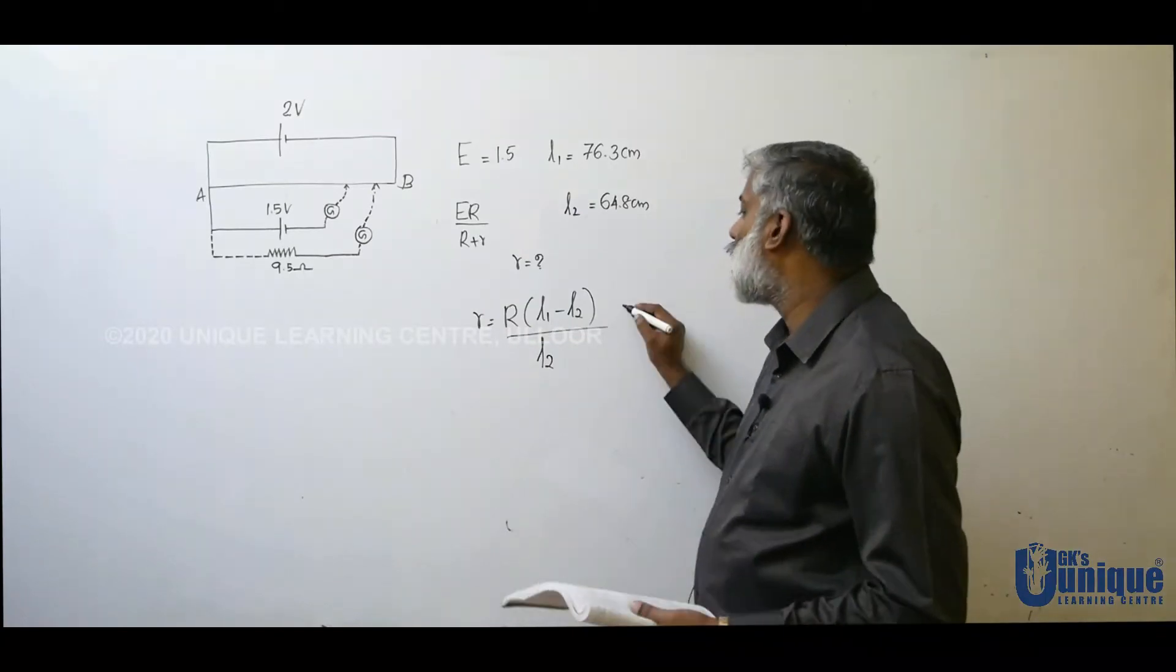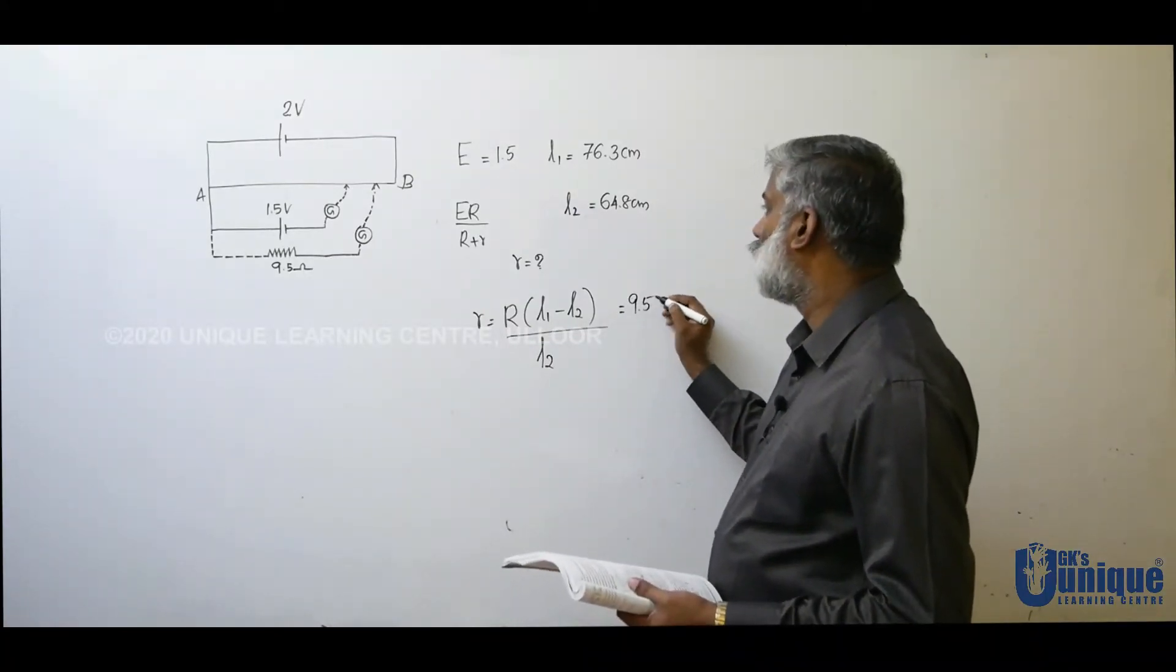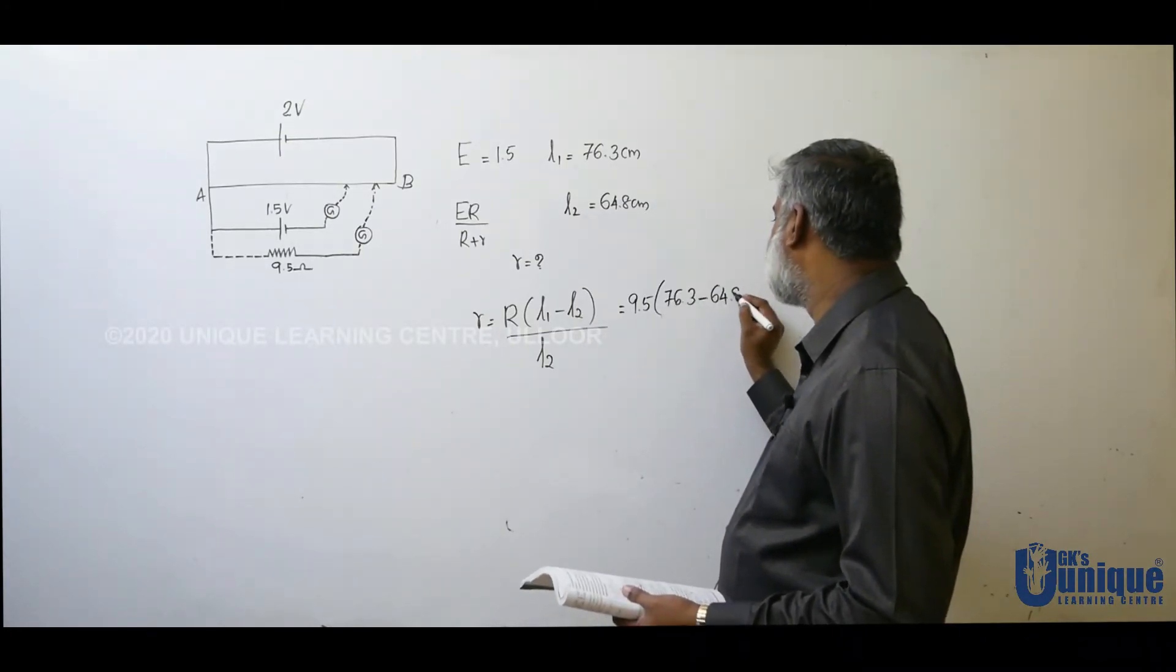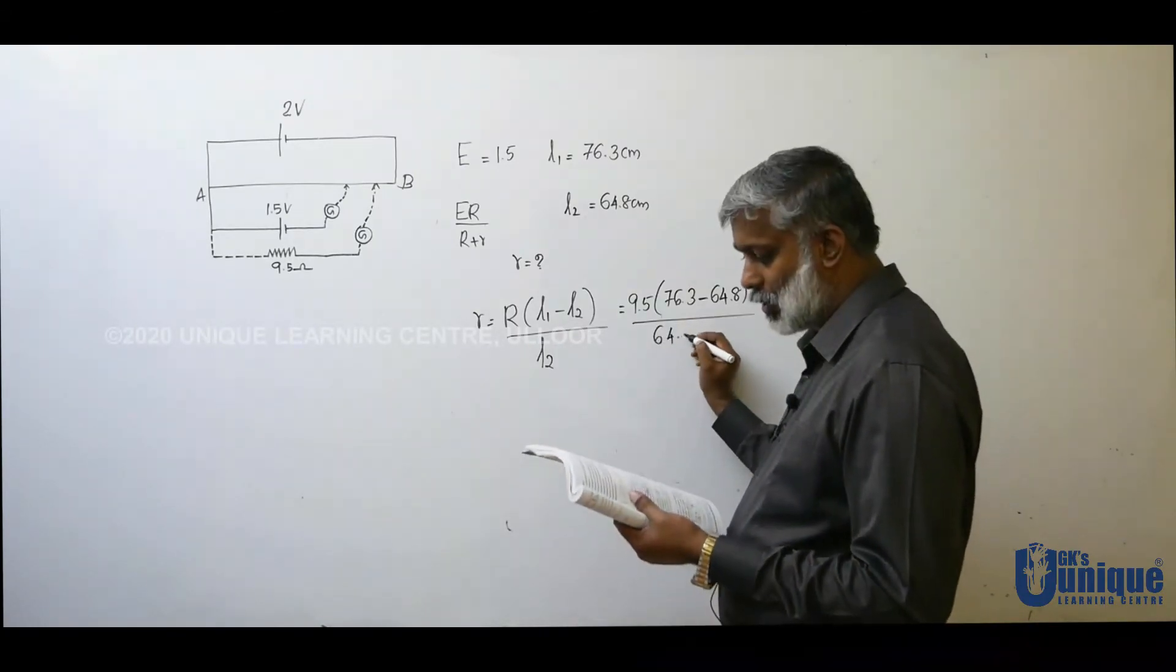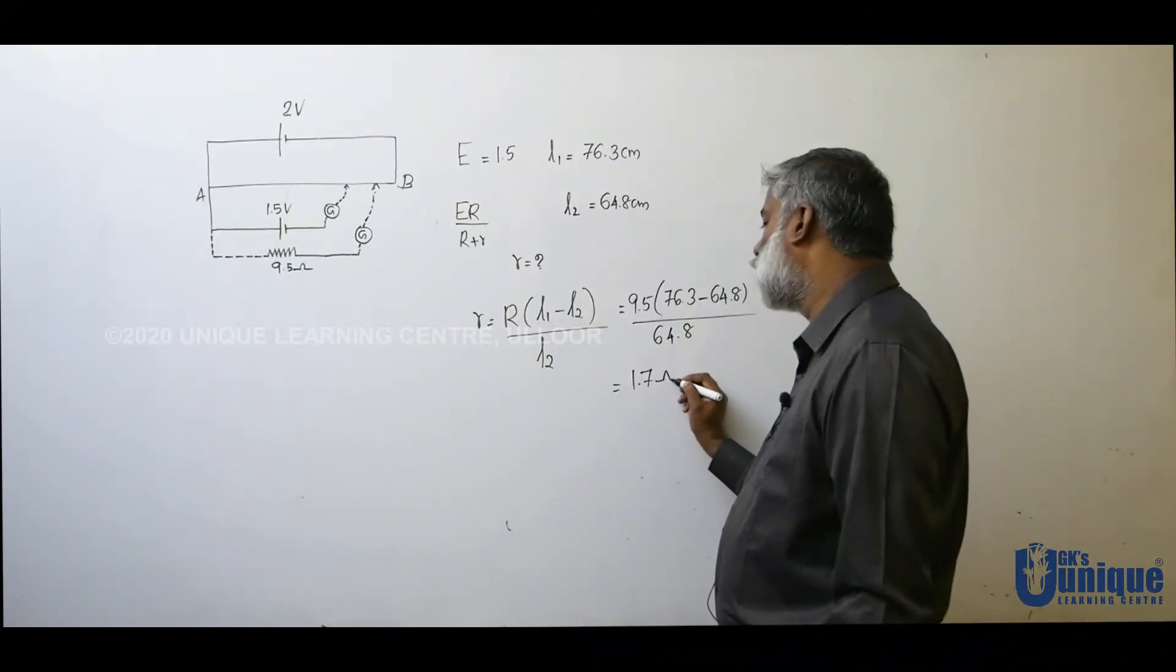Now substitute the values. What is R? 9.5 times L1 value 76.3 minus 64.8, the whole divided by L2 value 64.8. Now calculate, you will get 1.7 ohm.